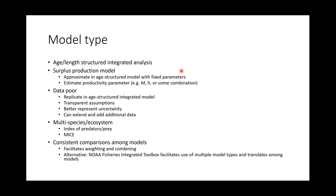What I'm recommending is the standard age- or length-structured integrated analysis because they can use lots of different types of data and have lots of different options and characteristics. There are also lots of other types of models that could be used — for example, surplus production models — however, we can approximate a surplus production model using an age-structured model with fixed parameters and then estimate productivity parameters like steepness or natural mortality. There's also a lot of data-poor type methods, and again we can replicate most of these in an age-structured integrated model because it makes the assumptions more transparent, we can better represent the uncertainty by estimating more parameters, and it can easily be extended with additional information.